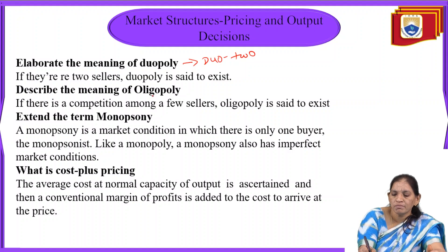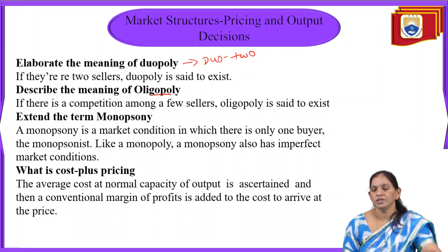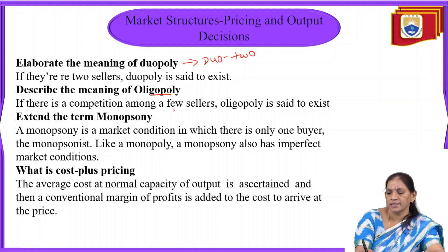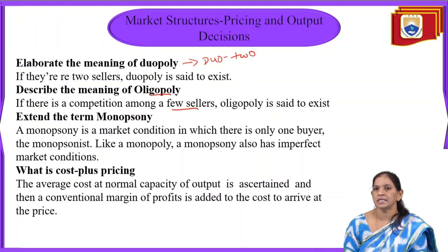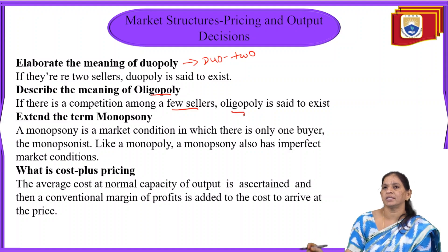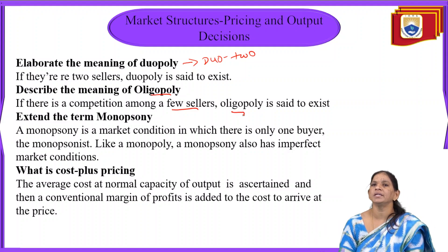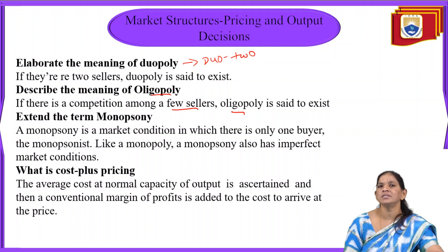What do you mean by oligopoly? Oligopoly is a competition among few sellers — the market structure consisting of more than two sellers. When few sellers exist in selling any sort of product and services, that type of market structure is called an oligopoly market structure, where competition exists among a few producers.